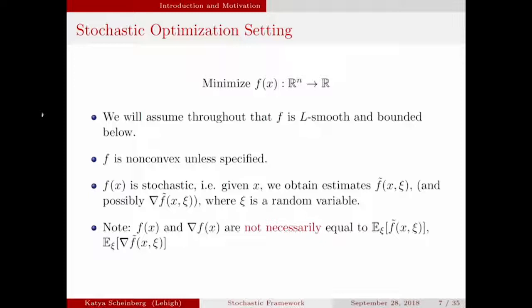My setting is going to be stochastic optimization in a classical sense, except we're minimizing some nice smooth objective function. It is stochastic, meaning that I cannot compute its values or its gradients, but I can compute their estimates. The only thing I'm not writing here is that the estimates do not have to be unbiased — they don't even need to be consistent in some cases, depending on what algorithm I'm talking about. Typically in stochastic optimization we minimize the expected value, but we don't have to do that. We can actually tolerate outliers in some estimates that are not necessarily unbiased.